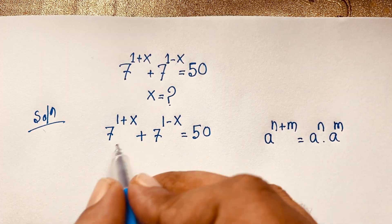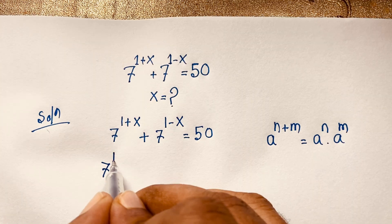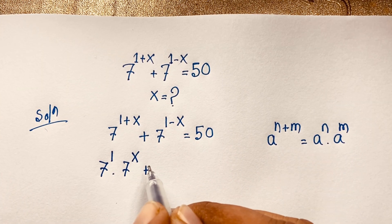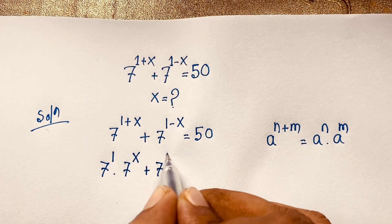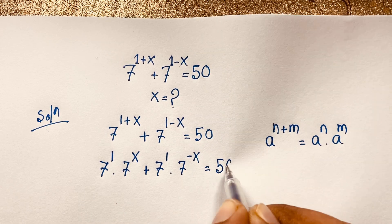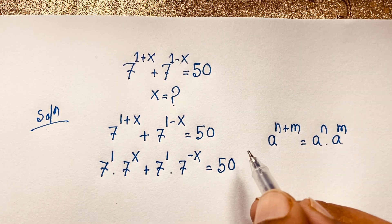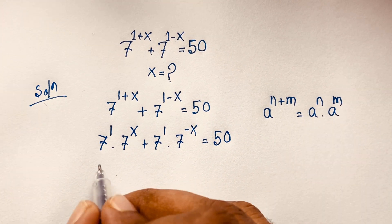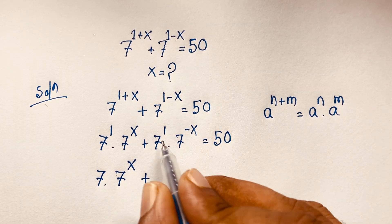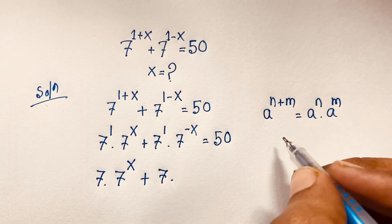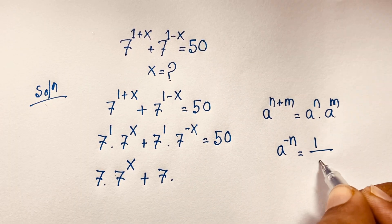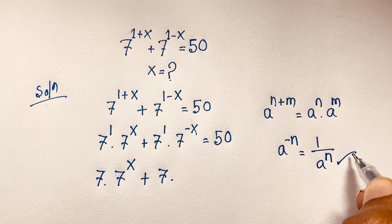If I apply this exponential formula here, this expression becomes 7 to the power 1 times 7 to the power x, plus 7 to the power 1 times 7 to the power negative x, equals 50. Now 7 to the power 1 is just 7. And we use the formula a to the power negative n equals 1 over a to the power n.